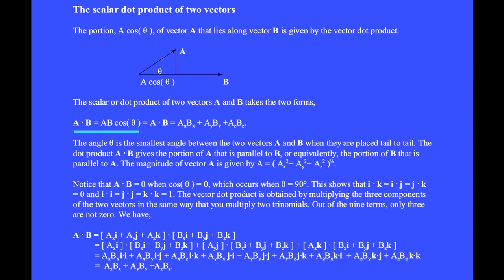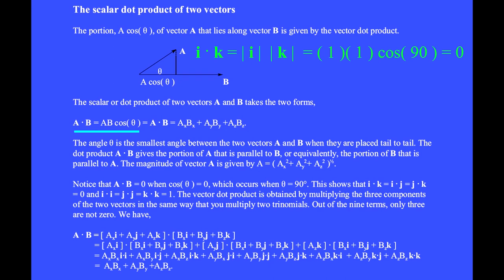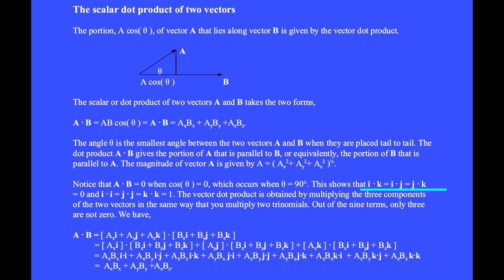For example, the unit vectors are mutually perpendicular. I hat dot K hat would be calculated as the magnitude of the first vector, which is one, times the magnitude of the second vector, which is one, times the cosine of the angle between them, which is 90 degrees — giving zero. We have î·ĵ = 0, ĵ·k̂ = 0, and î·î = 1, as does ĵ·ĵ and k̂·k̂.